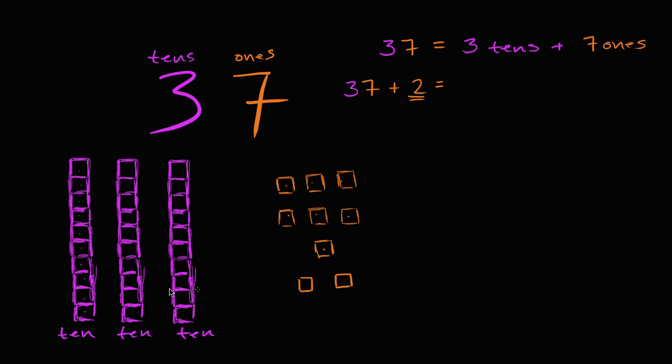So now we still have 3 tens, so let's write that down. So we still have 3 tens, but now we have a different number of ones. We now have 1, 2, 3, 4, 5, 6, 7, 8, 9. We now have 9 ones. Or another way to think about it, 7 ones plus 2 ones is 9 ones.